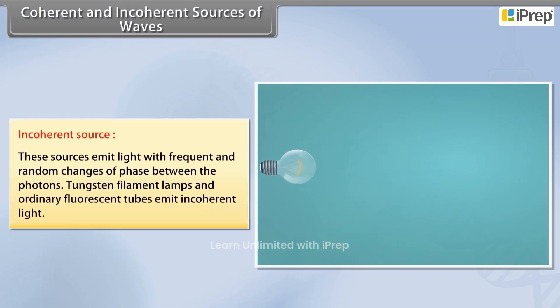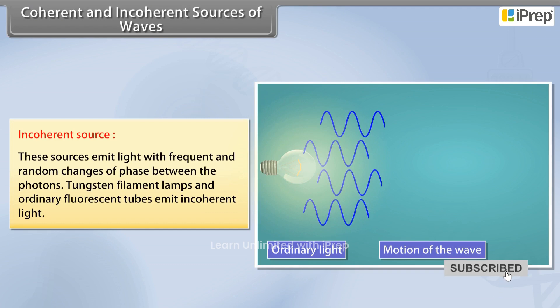Incoherent sources emit light with frequent and random changes of phase between the photons. Tungsten filament lamps and ordinary fluorescent tubes emit incoherent light.